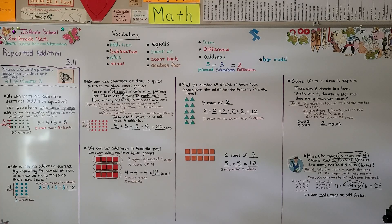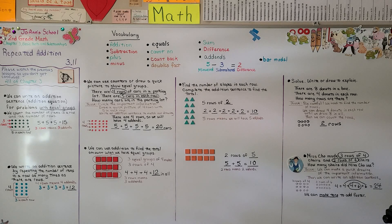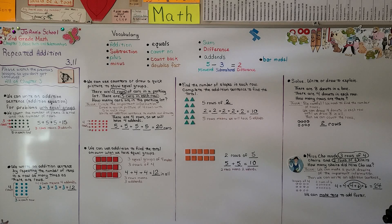So remember that we can use repeated addition. We can write an addition sentence for problems with equal groups. The number of rows is how many addends we'll have, and the number in the row will be the addend. Our next lesson is going to be in chapter 4 — we're going to talk about two-digit addition. I hope you enjoy the rest of your day, and I hope I see you next time. Bye!